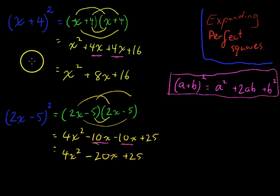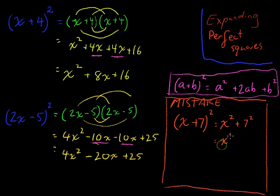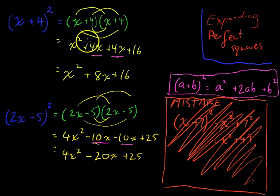I mentioned at the start that people make the same mistake over and over again, so let me show you so you never make it. The mistake is: people see x plus 7 squared and think all they need to do is square the first number to get x squared, then square the next number to get 49, giving x squared plus 49. That is so wrong. Expanding a perfect square takes more work than that — you must include the 2ab middle term. Please write down this mistake and cross it out so you never do it.